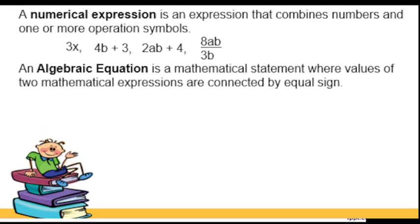Whereas an algebraic equation is a mathematical statement where values of two mathematical expressions are connected by equal sign. You have 4x minus 8 equals 24, 2b plus 3 equals 27, 12ab over 4b equals 144.